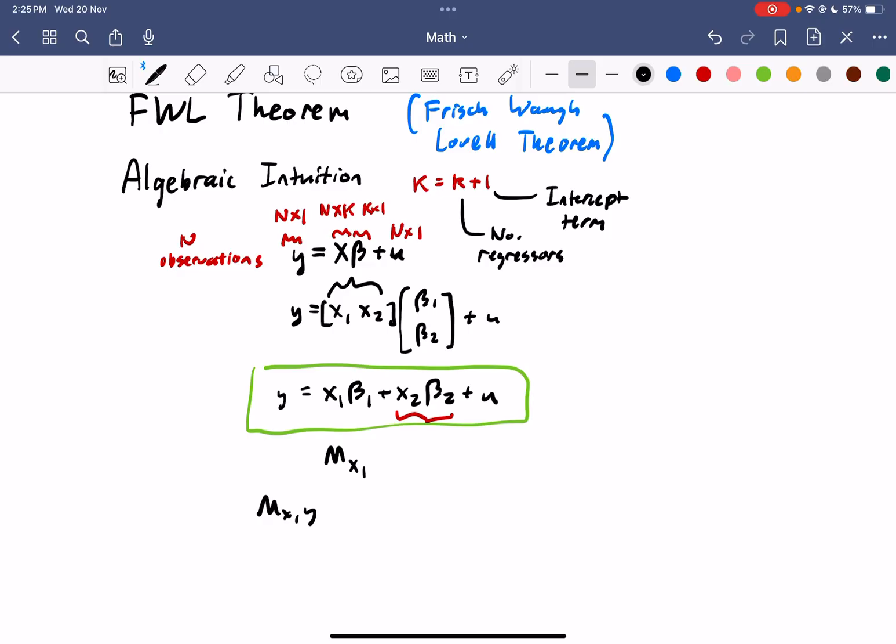So, to see how this works, let's just multiply the entire model. We've got the orthogonal projection matrix x1 times x1 times beta 1 plus the orthogonal projection matrix of x1 times x2 times beta 2 plus the orthogonal projection matrix of x1 times the error term vector.